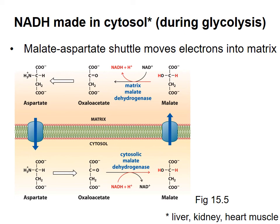Having explained how electrons from NADH are used in the electron transport chain, in the next video I will discuss how QH2 produced in the citric acid cycle fits into this system.